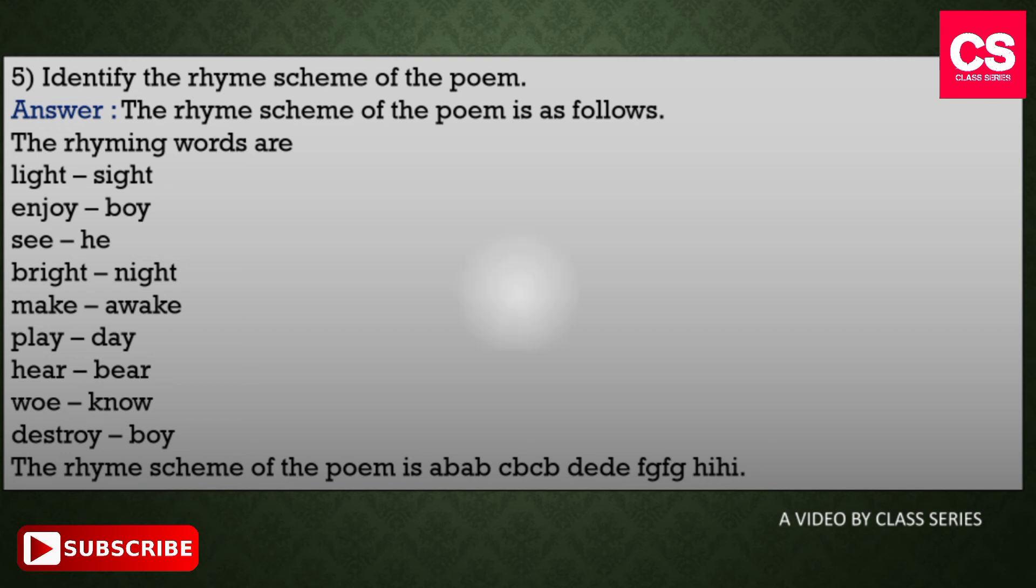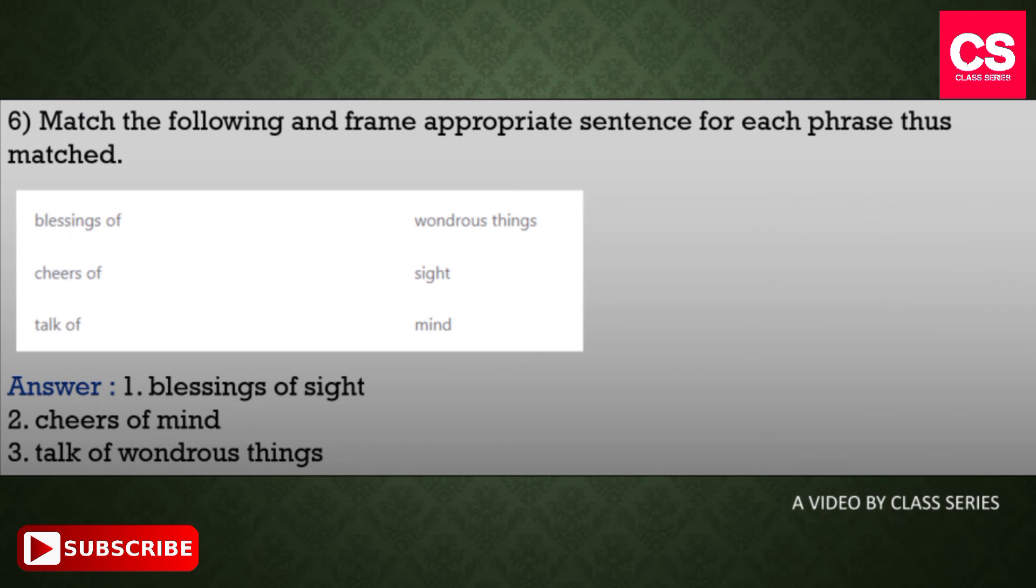Our sixth question is: Match the following and frame appropriate sentences for each phrase thus matched. The question has: blessings of, cheers of, talk of. And the options are: wondrous things, sight, and mind. The correct answer is: 1) blessings of sight, 2) cheers of mind, 3) talk of wondrous things.